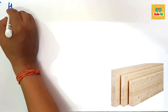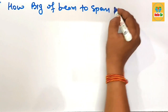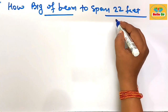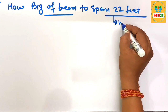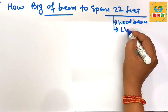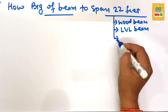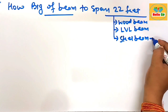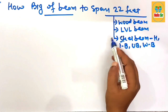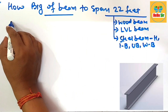In this video, you'll learn about how big a beam you need to span a 22-foot distance. We'll cover three types of beam material: the wood beam — what size is required to span 22 feet; the LVL, or laminated veneer lumber beam — what size is required; and the steel beam, also known as H-beam, I-beam, universal beam, or W-beam. You'll know the size required for each to span 22 feet.